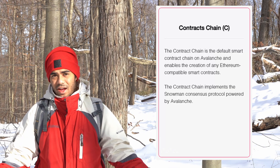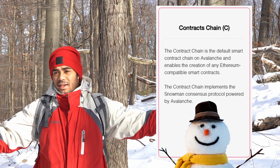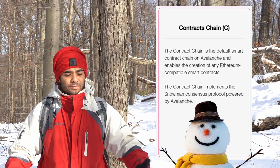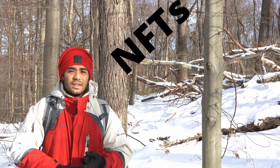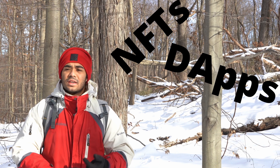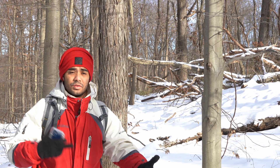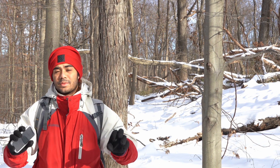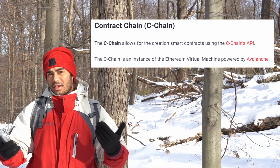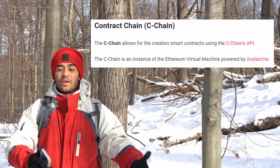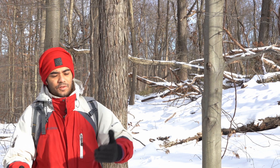Lastly, we have the contract chain. This also uses the Snowman consensus method. It's made for making smart contracts — much like Ethereum, where you have NFTs, decentralized applications, and pretty much anything you can do on Ethereum, you can do here. And notably, smart contracts made on Avalanche are also compatible with Ethereum smart contracts, so it seems like you can shift one over to the other.